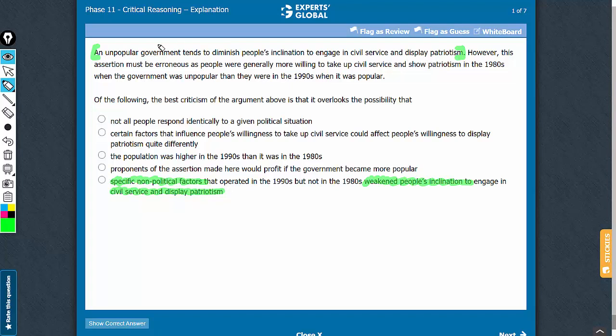The assertion does not say that unpopular government is the only factor that influences people's inclination to engage in civil service and display patriotism. Popularity of a government may be only one of many such factors. And yes, thus certain non-political factors contributing to this change in people's behavior may be the actual reason here. Therefore, to conclude that the assertion is erroneous would be hasty.